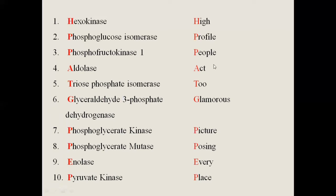This is how you can easily remember these enzymes — the first letter of each word in the mnemonic corresponds to the first letter of each enzyme. Hexokinase puts a phosphate on glucose (phosphorylation), phosphoglucose isomerase causes isomerization, then phosphofructokinase-1, aldolase, and triose phosphate isomerase follow.